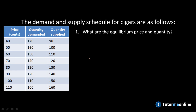Let's start by looking at what is the equilibrium price and quantity in this demand and supply schedule. The first thing we have to ask is: what exactly is equilibrium? Equilibrium is achieved when the quantity supplied (QS) equals quantity demanded (QD). Looking at our demand and supply schedule, we can see that quantity demanded equals quantity supplied at 130.